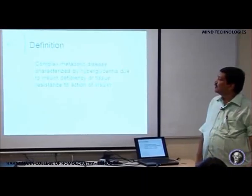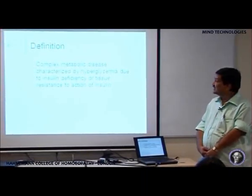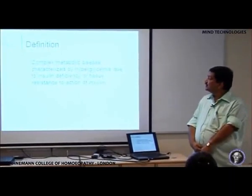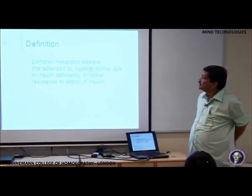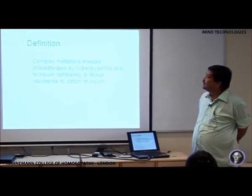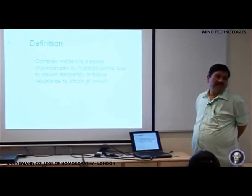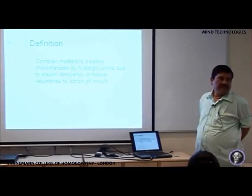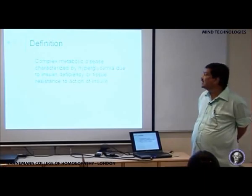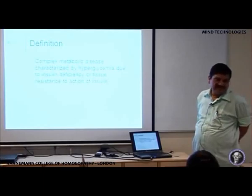Diabetes mellitus is a complex metabolic disease which is characterized by hyperglycemia, and this hyperglycemia is either due to insulin deficiency or tissue resistance to action of insulin. So we have problems in all three metabolisms: carbohydrate metabolism, protein metabolism, as well as lipid metabolism, and because of that there is a very high incidence of complications in diabetes mellitus.